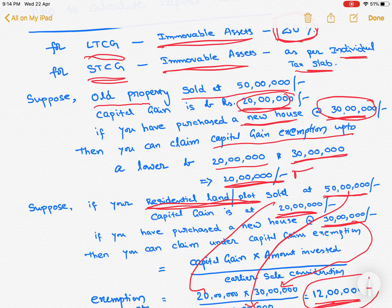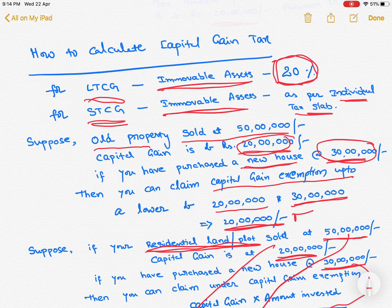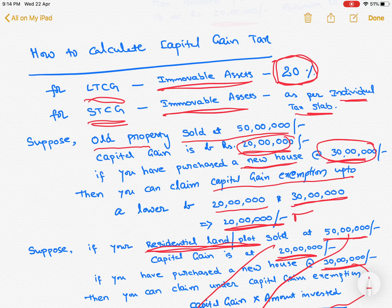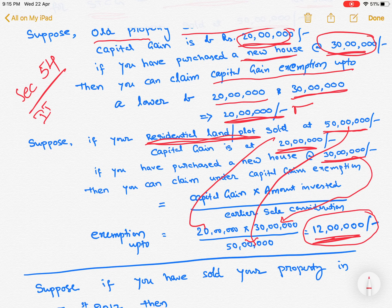So the key point to understand is: whatever property you have sold — whether it is a residential property, residential land, or residential plot — in order to get exemption from capital gains, you must either purchase or construct a residential house only, not residential land. You must never purchase a residential plot with that amount. This is covered under Section 54 of the income tax exemptions.